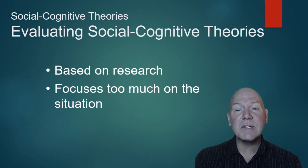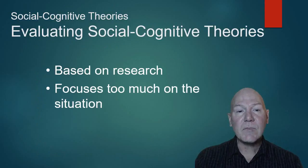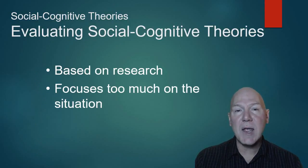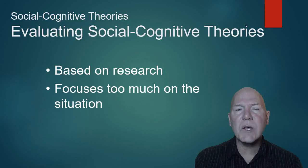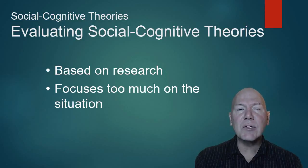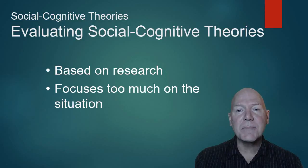The social cognitive theories are based on research, and we do find that people tend to behave as they have in the past. However, a criticism is that this approach focuses too much on the situation and removes the inner person from the equation a little too much.